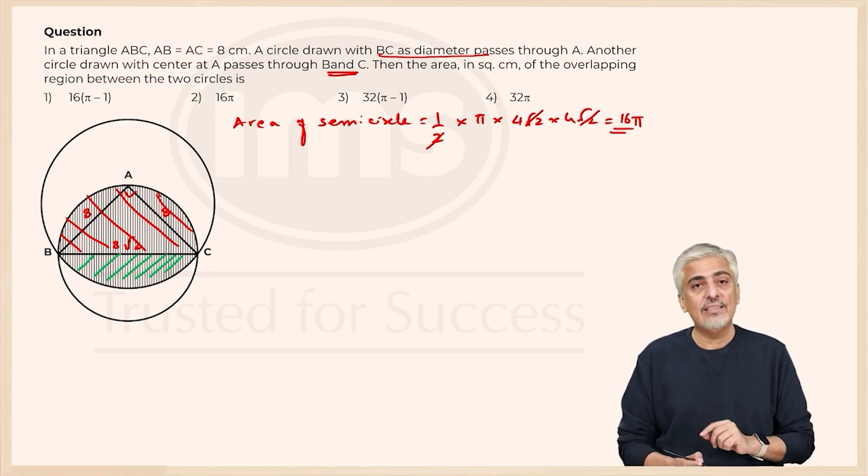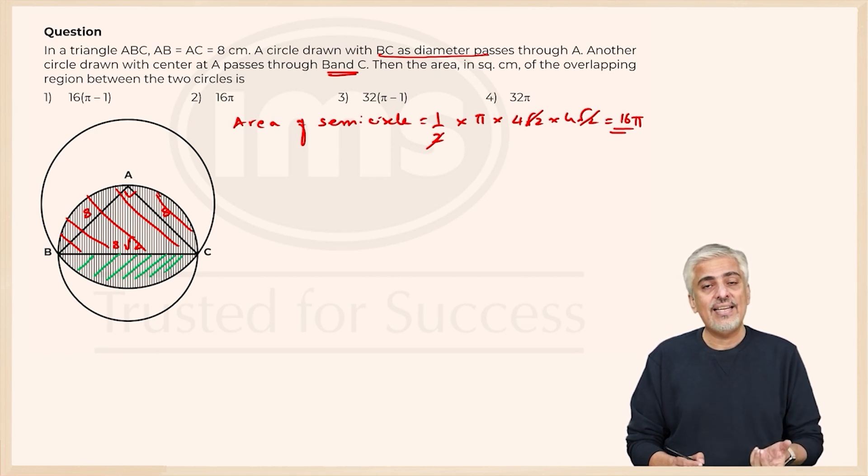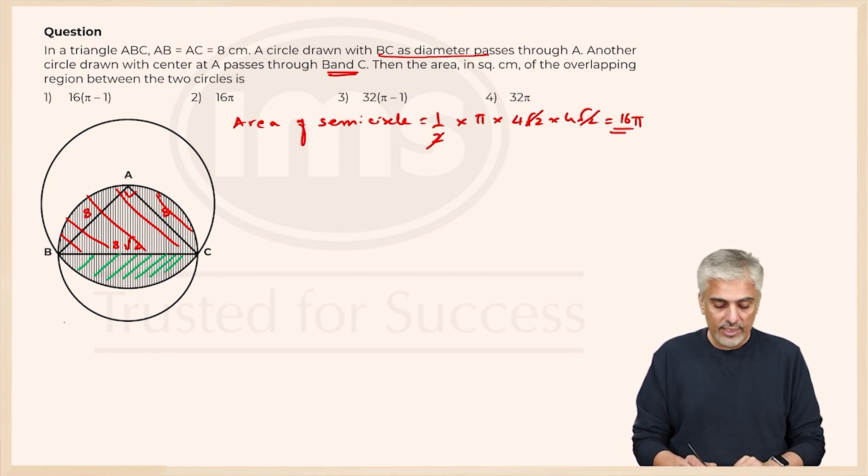Now that's for the bigger circle. I will have to figure out what is the bigger circle radius, then area of the segment property. So let's work on that first. So for the bigger circle they have said center A and the circle is passing through B. So AB becomes my radius. So for the bigger circle radius is 8.